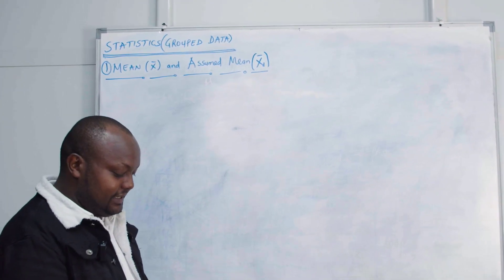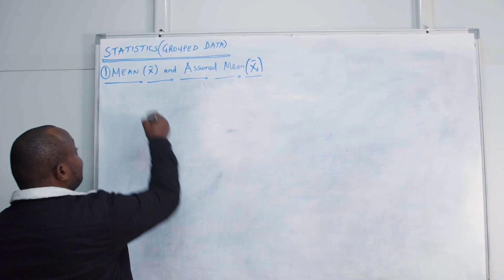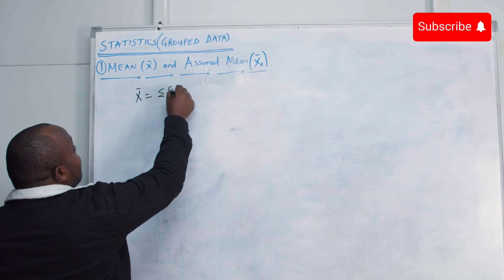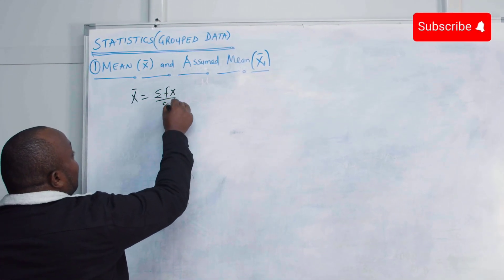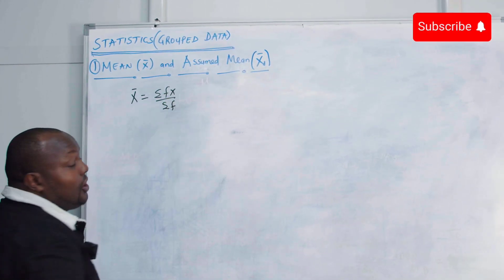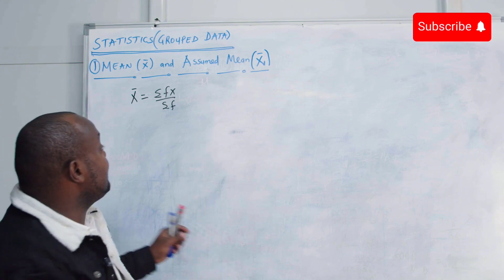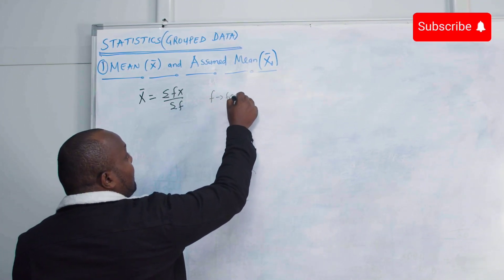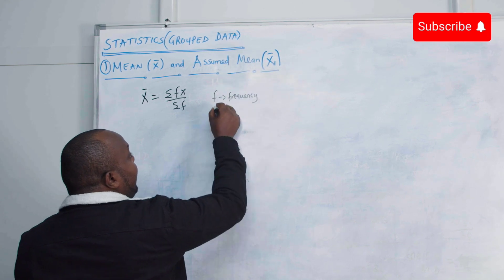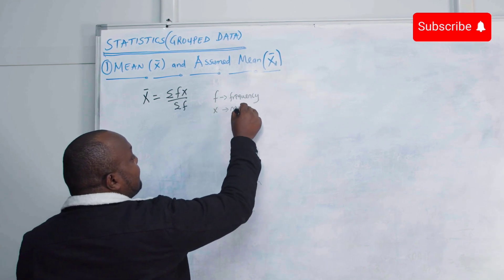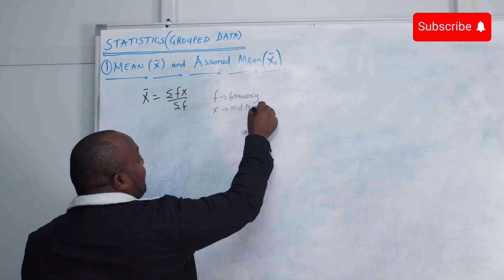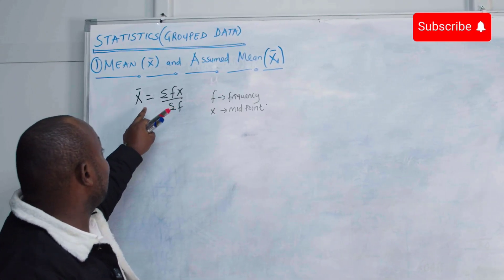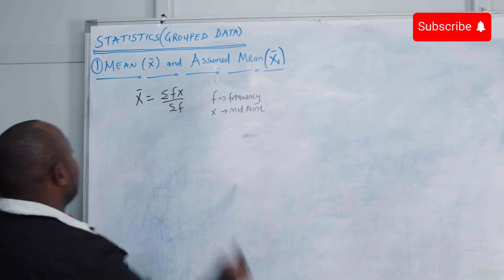How do we calculate the mean? We always say it is the summation of f times x over the summation of f, where f is the frequency and x is the midpoint. So if you want to calculate the mean, you need to be aware of this formula.